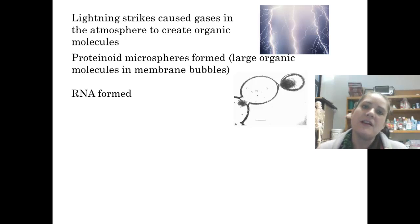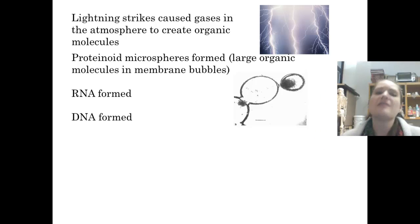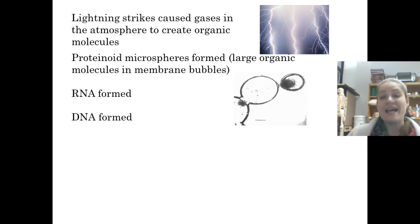After those proteinoid microspheres formed, somehow something happened that RNA then formed. So we had the proteins first, and then RNA formed from the protein. Over millions and millions of years then, we went backwards and DNA formed. So originally, the very first time this happened, that actually happened in reverse. We started with proteins, RNA happened, and then DNA happened.